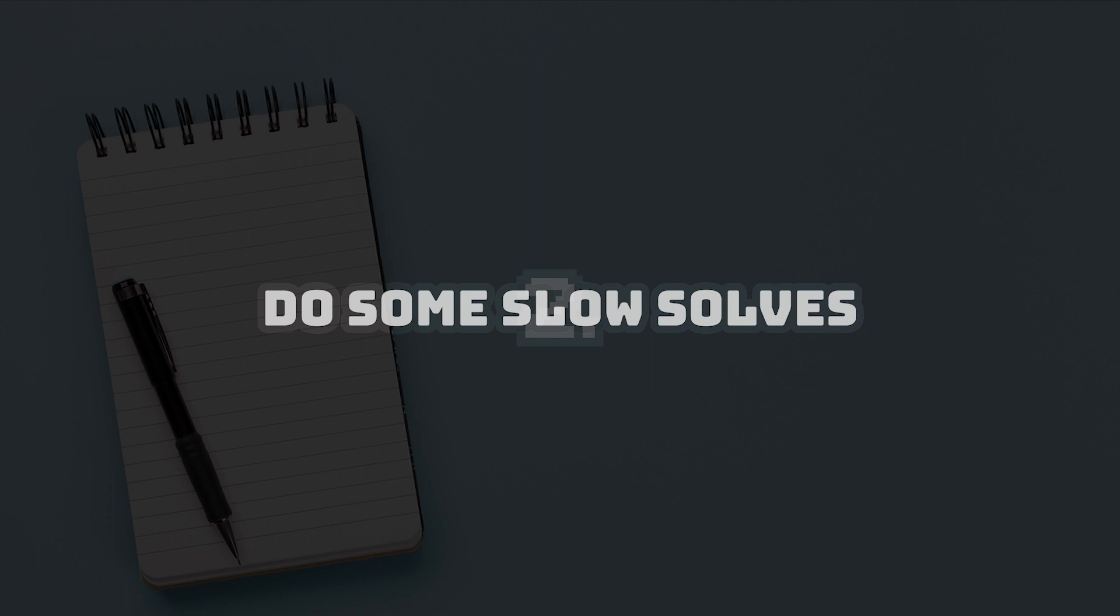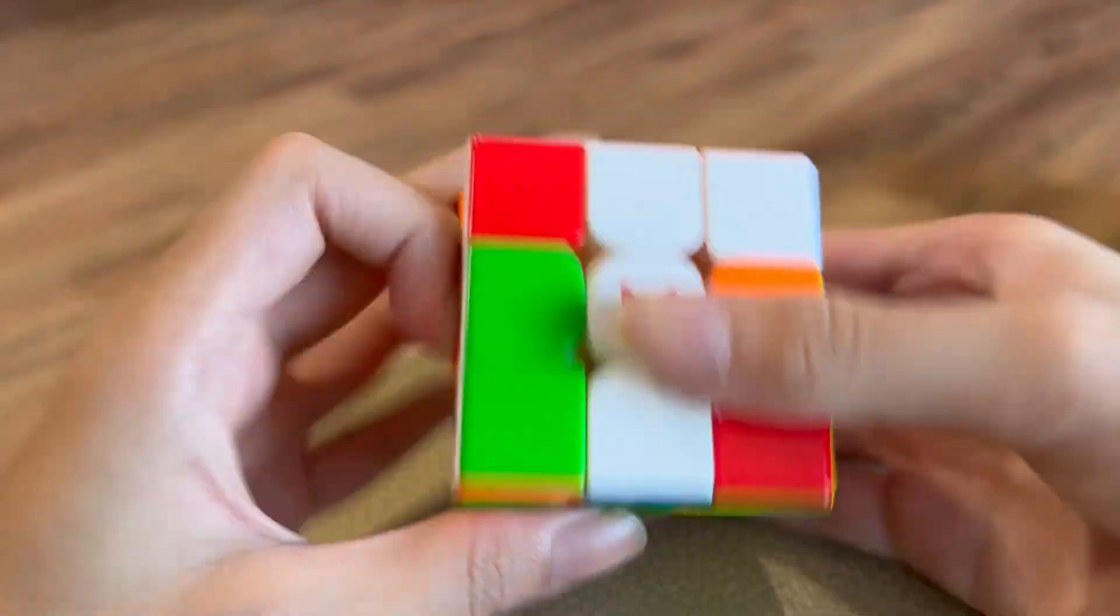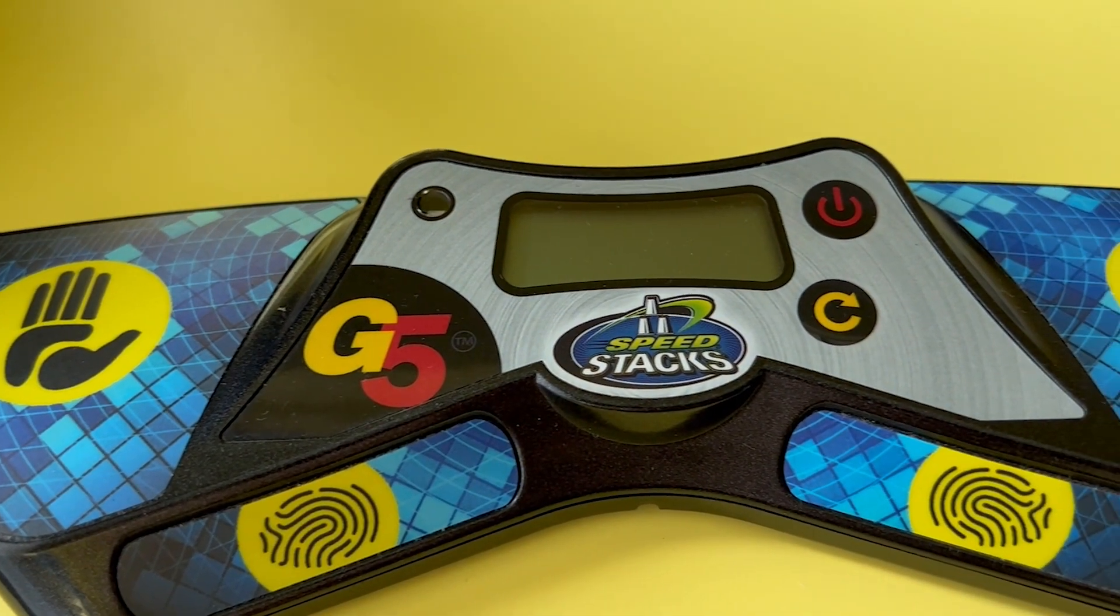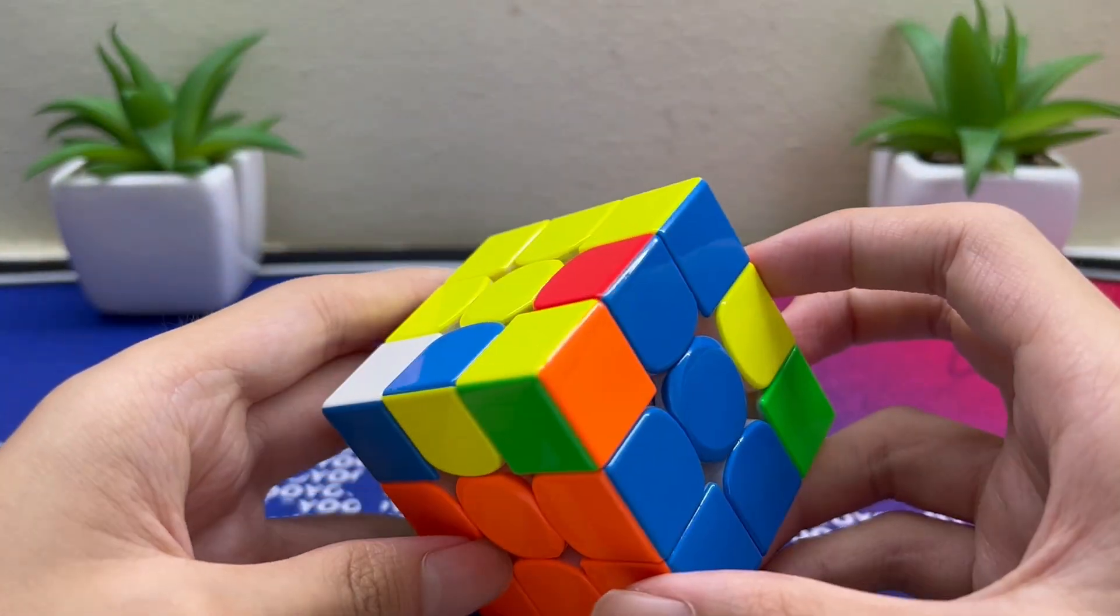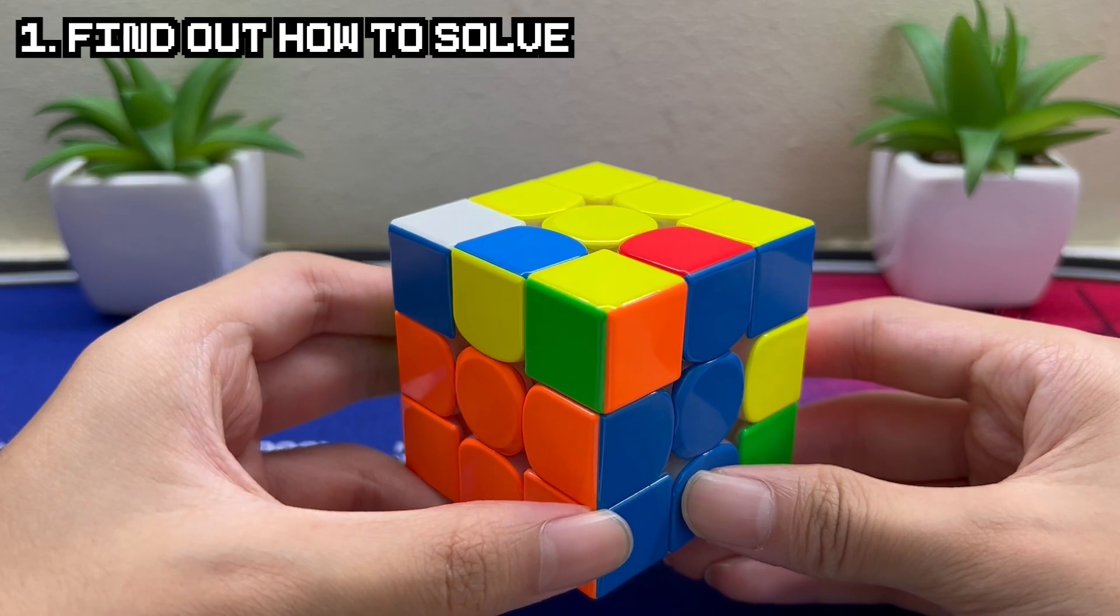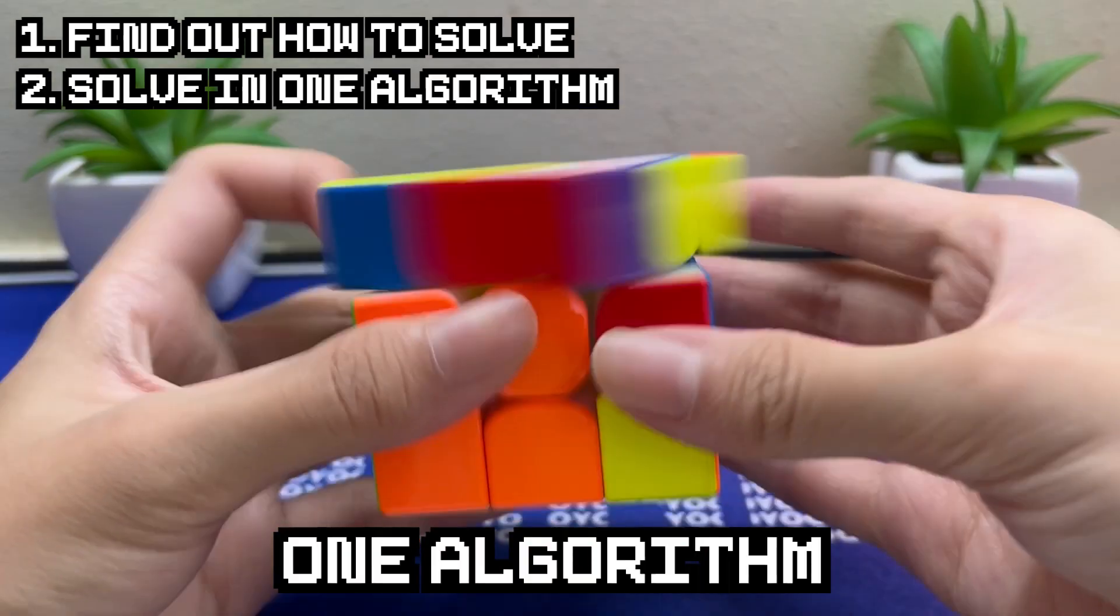Do some slow solves. If you happen to scramble your cube on the couch and don't have a timer with you, it will be the perfect time to do some slow solves. For example, for this unsolved F2L, I will start by finding out a way to solve the red-blue pair using only one algorithm.